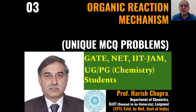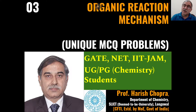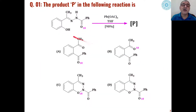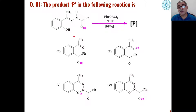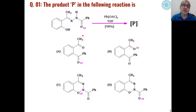Dear students, continuing with our lecture series on multiple choice question problems. This is our third lecture based on MCQ on organic reaction mechanism. As you have seen in the previous two lectures, here also we will have five problems and we will try to find out what is the product out of the four choices given for each reaction, and then we will show how that product has been formed.